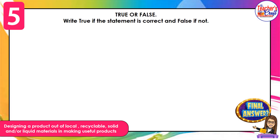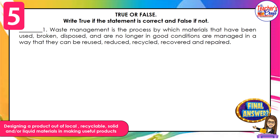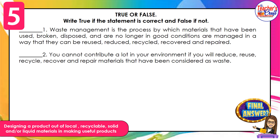Now let us have the post-test. True or false — say true if the statement is correct, and false if not. Number one: waste management is a process by which materials that have been used, broken, disposed, and are no longer in good condition are managed so they can be reused, reduced, recycled, recovered, and repaired. True or false? Correct, this is true. Number two: you cannot contribute a lot to your environment if you reduce, reuse, recycle, recover, and repair waste materials. True or false? Very good, this is false.